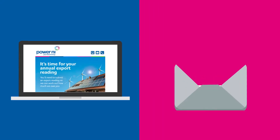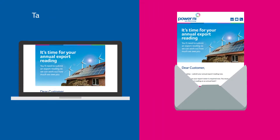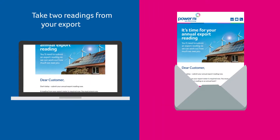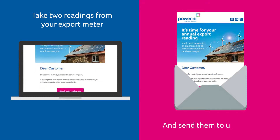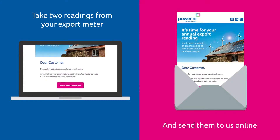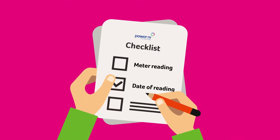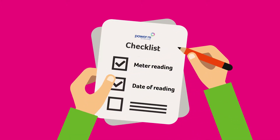You'll get an email or letter from PowerNI every year in late September, reminding you to take two readings from your export meter and send them to us online. We'll need your meter reading and the date of the reading.